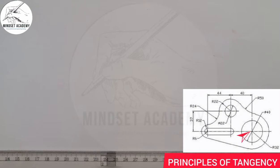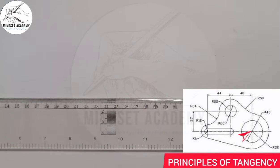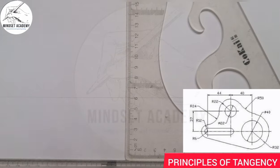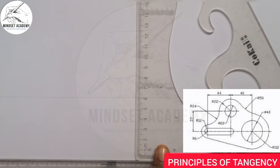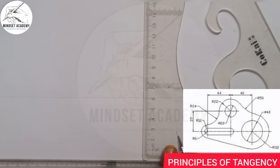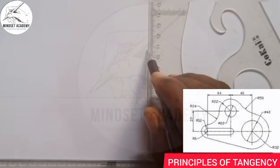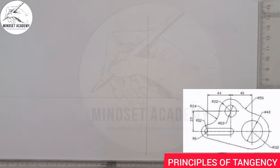I'm going to draw my straight line in this fashion. After I've done that, I'll also draw a vertical line at any center of my choice. I can choose to draw it at this point here. So this is the center here.